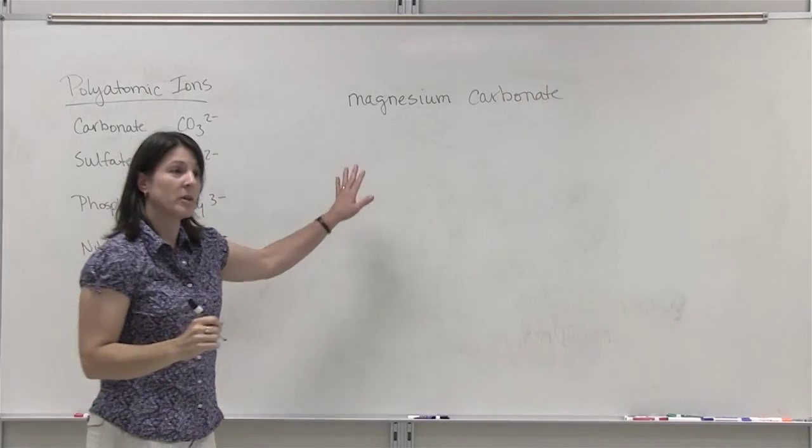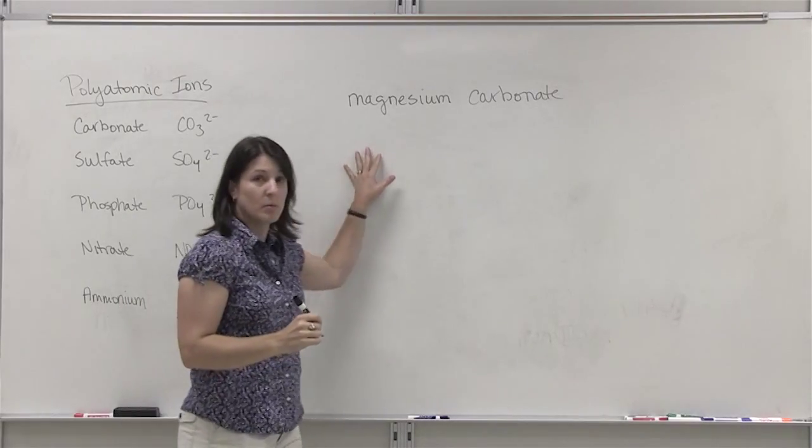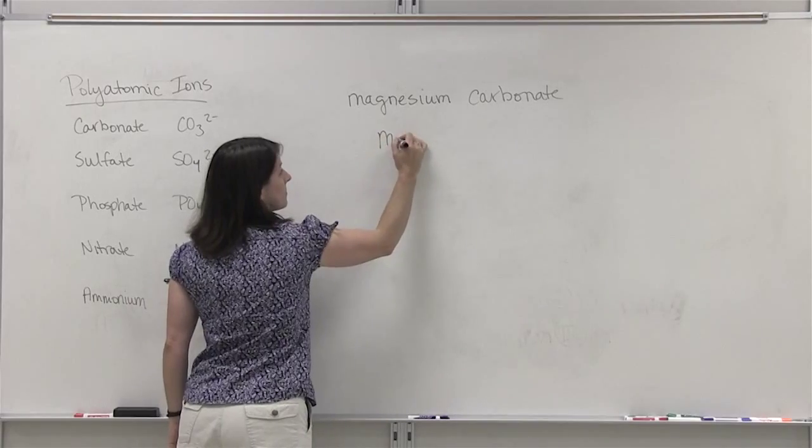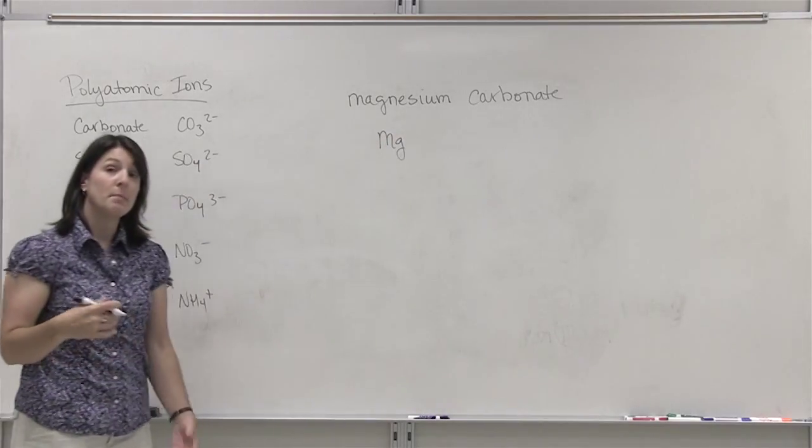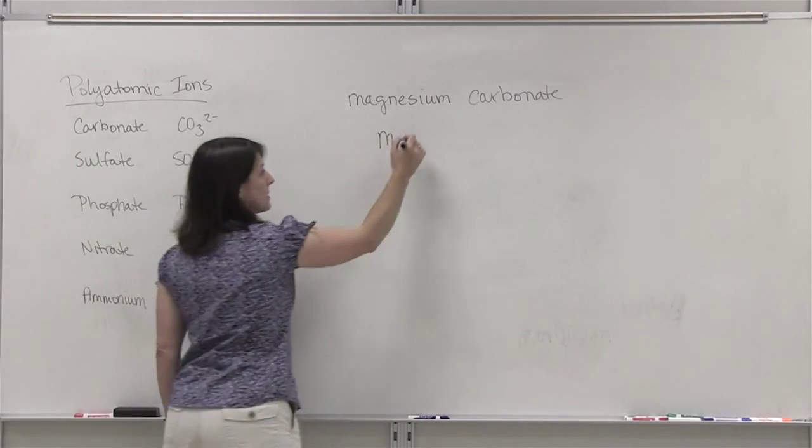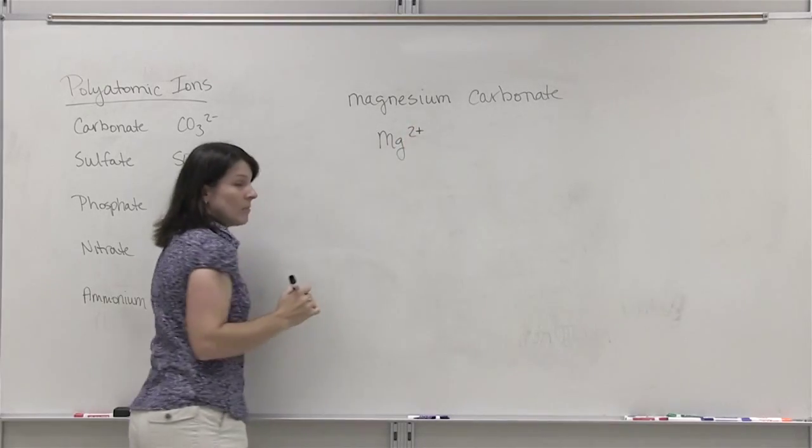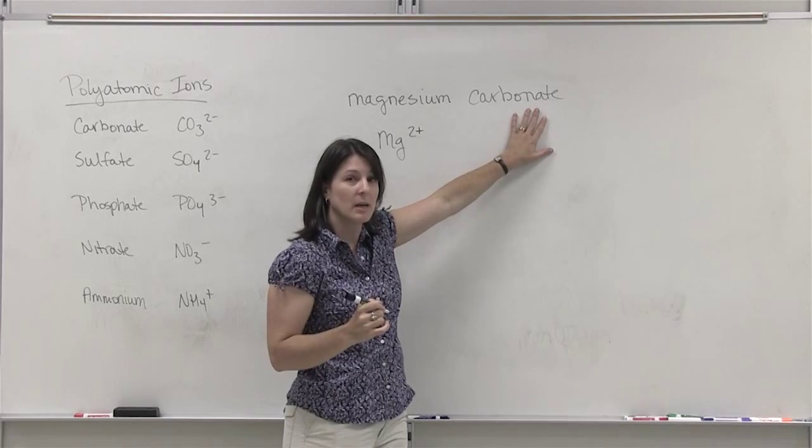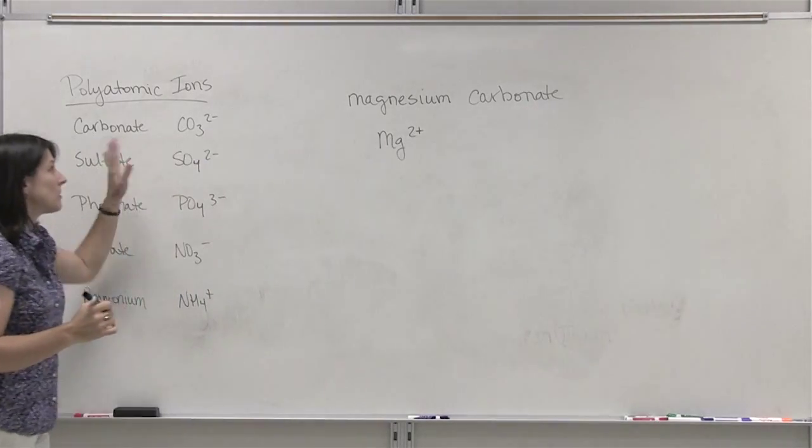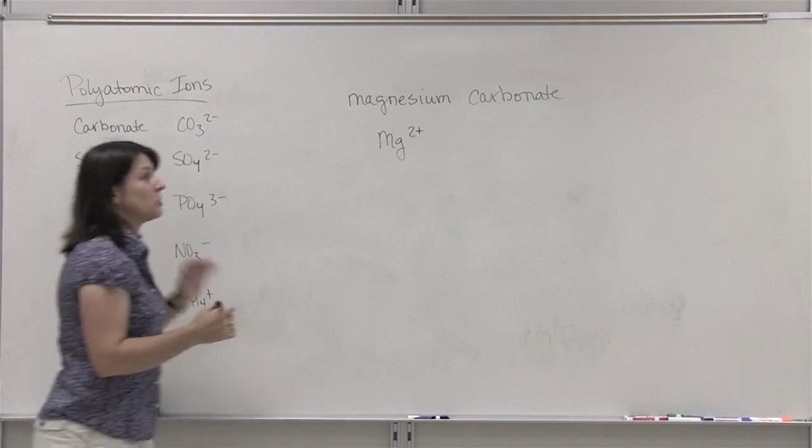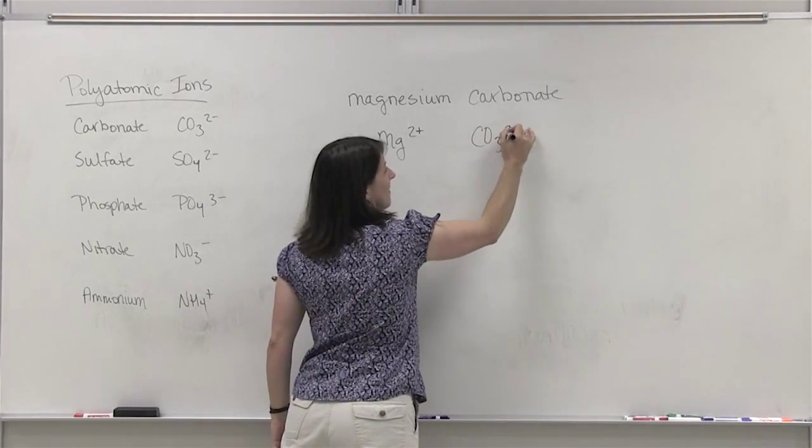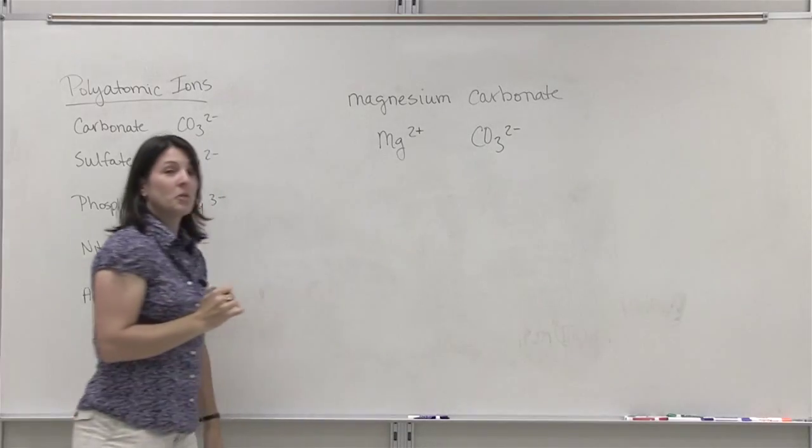First step when you're given a name is to write the appropriate ions for each. Magnesium is a group 2A metal so it forms a 2 plus ion. Carbonate, since this is a polyatomic ion, we look at the chart and look up its formula. You'll probably have most of them memorized by the end of this course. CO3 2 minus.